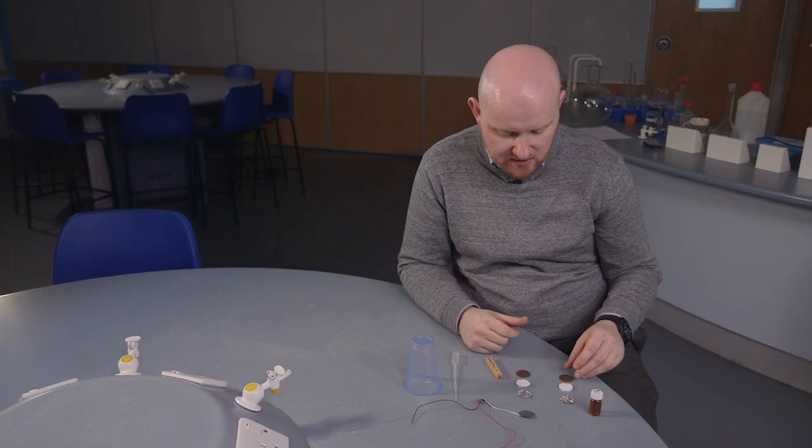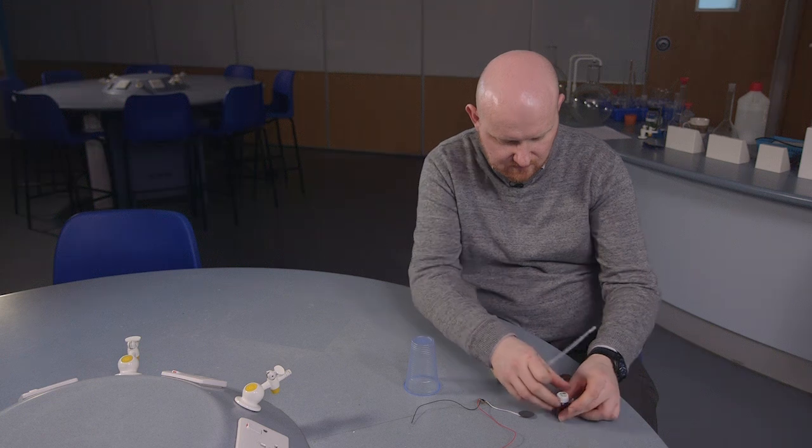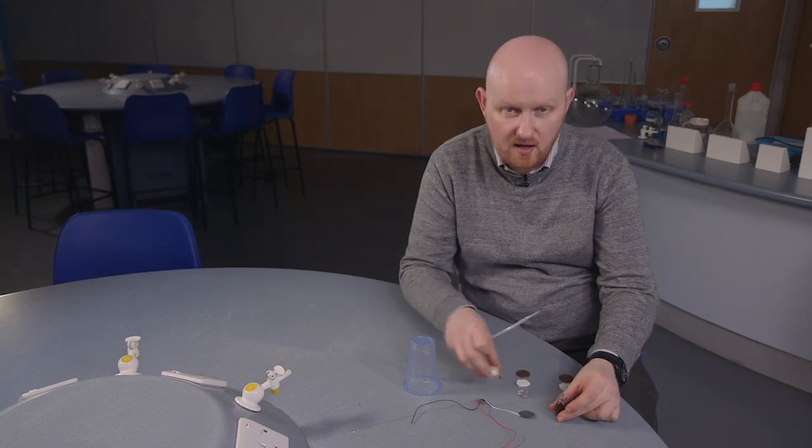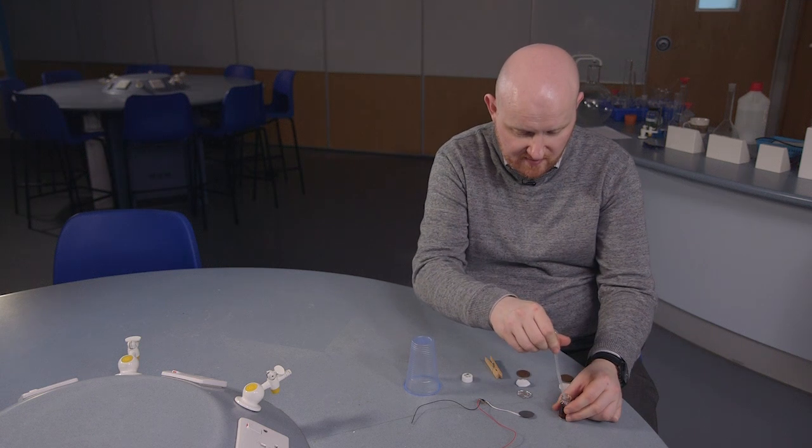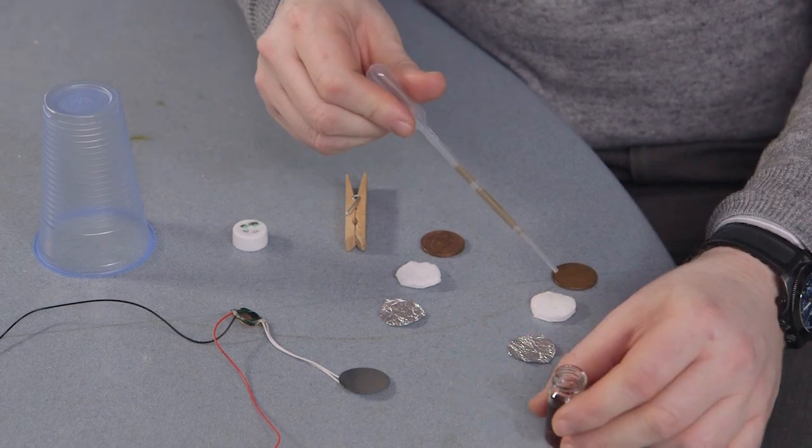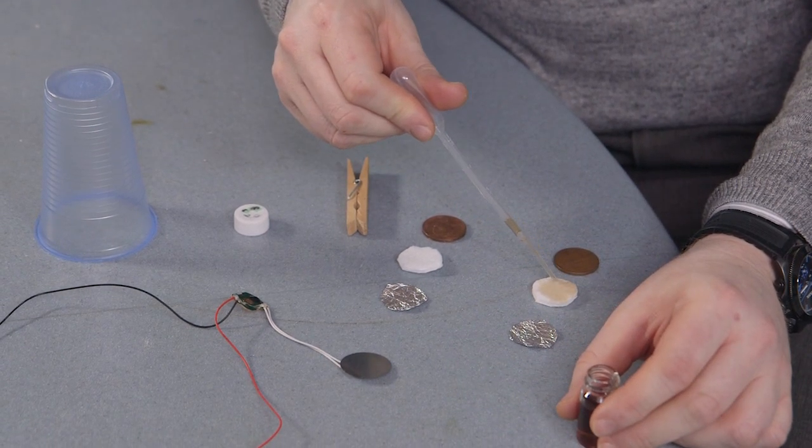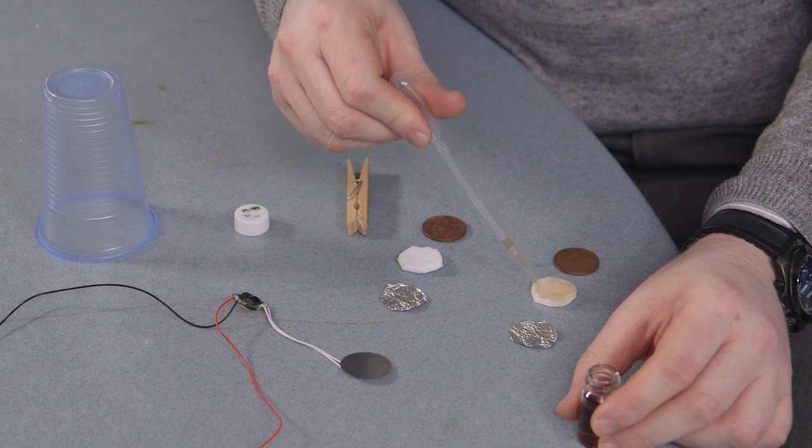So what we need to do is put this all together. Now firstly, I'm going to take some of our malt vinegar and just soak the cotton pads. This is going to act as our electrolyte.